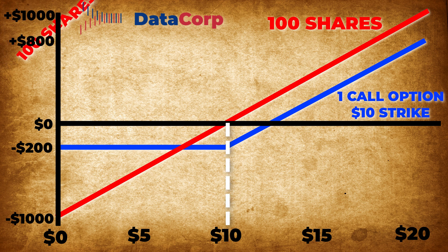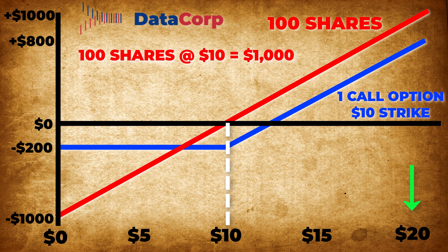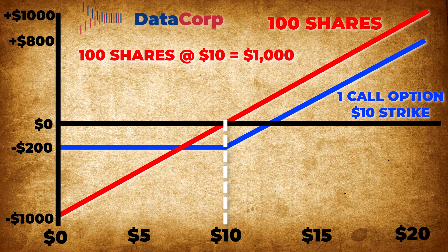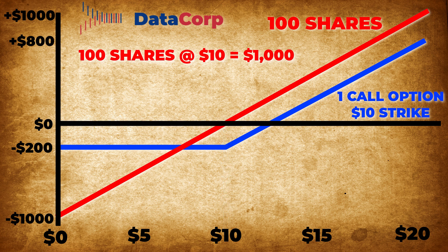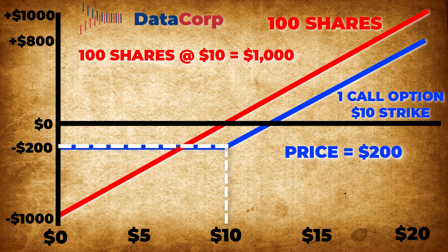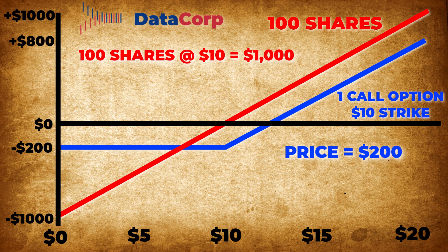Let's make this concrete and pretend that Datacorp stock is currently trading at $10 per share. If we bought 100 shares of Datacorp, that would cost us $1,000. As the underlying price changes — that's the horizontal axis — the value of our investment changes too. If the price goes up to $20, we've doubled our investment. If it goes down to $5, we've lost $500. And critically, if the price stays at $10 per share, our profit is $0 — we haven't made any money, but we also haven't lost any. For options, let's say the option to buy Datacorp at $10 per share for the next 60 days costs $2, which is actually $200 since options are for 100 shares at a time. So if the stock price stays at $10 per share, we've actually lost the $200 we just spent to buy the option. As the price of the stock goes down, we don't actually lose any more money. The nice thing about call options is that you never lose more than you invest.